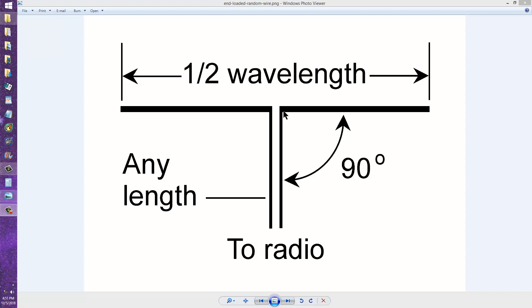Now this half wavelength here will contribute to the radiation and will alter the radiation pattern of your random wire, but obviously this system will work best if the feed line is at least a quarter of a wavelength long, but it doesn't have to be any particular length.